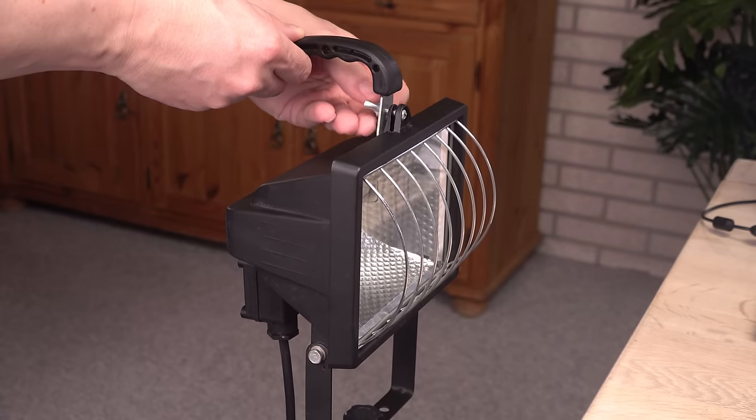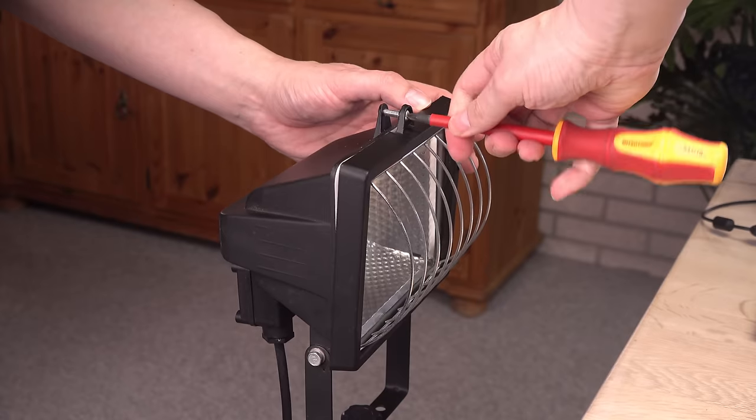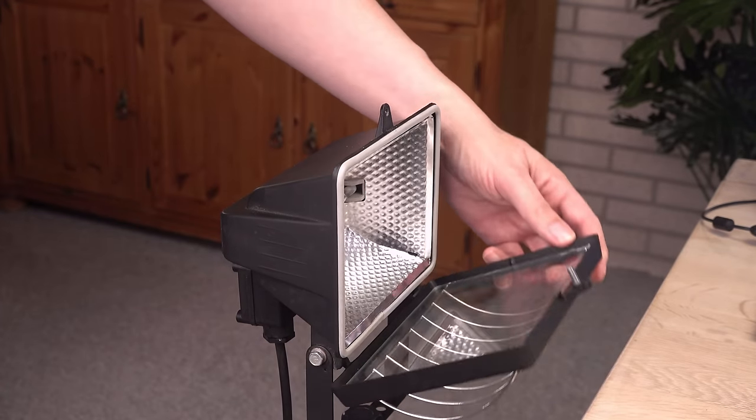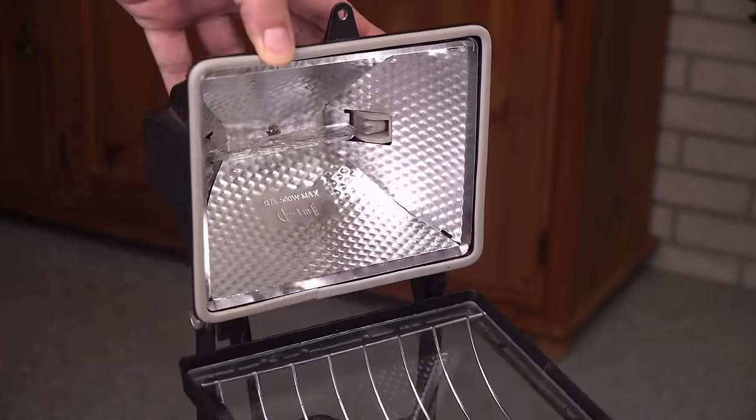Now let's try what the manual tells me not to do. Run the halogen lamp without the protective glass in front of it. There we go. The quartz bulb is now free. Will this make any difference?